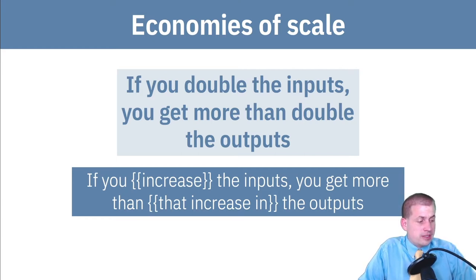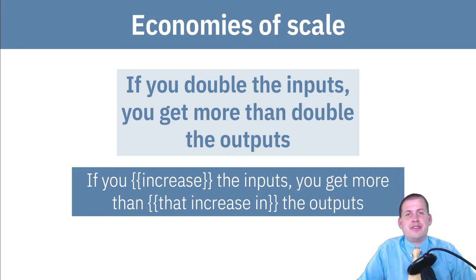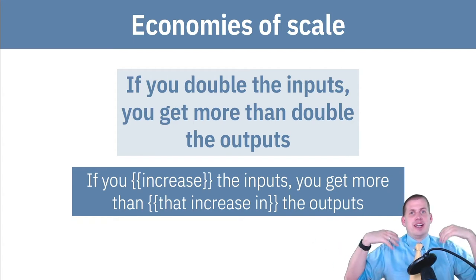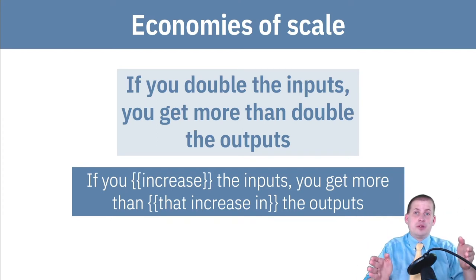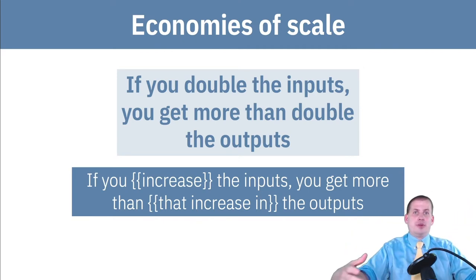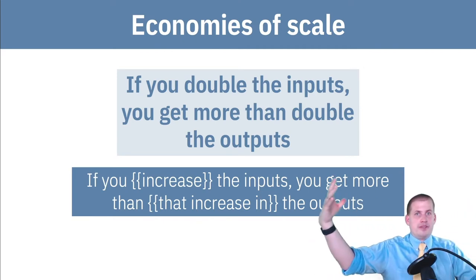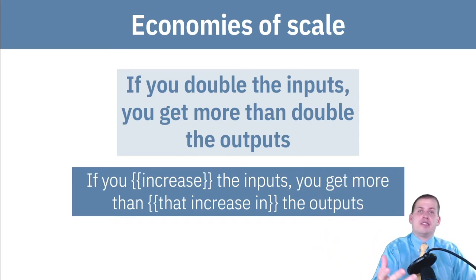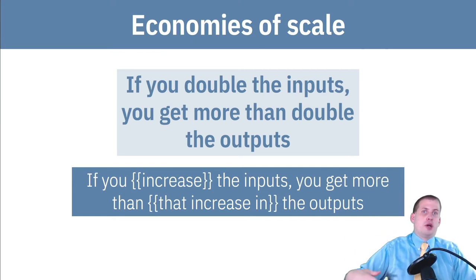We see this all the time with creating stuff. Sometimes if you're trying to create a single spoon, you have to build a whole factory and hire a whole bunch of people just to create one spoon, and that's going to be crazy expensive. But the cost to make a second one, if you keep the employees and the factory constant, starts getting cheaper per spoon as you scale up how many spoons you're making.